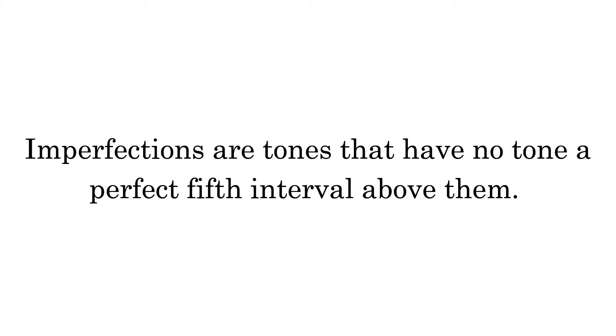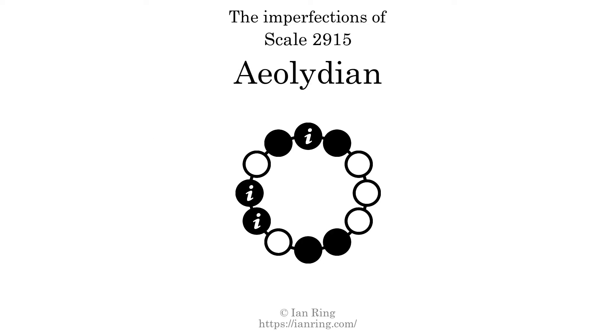Imperfections are tones that have no tone a perfect fifth interval above them. This scale has three imperfections. They are at positions here, here, and here.